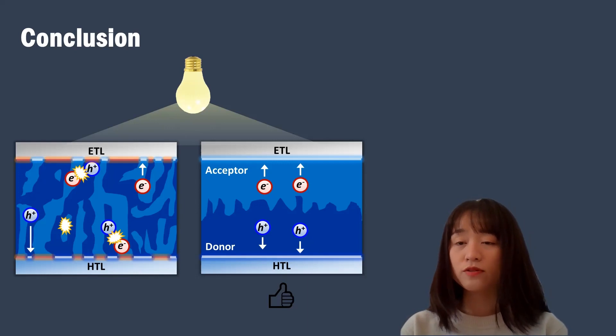Thanks to ideal structure of bilayer, namely pure acceptor and donor layer with ideal contact with each electrode, all charge carriers can be extracted efficiently without any charge trapping. Therefore, bilayer devices are greatly suitable for indoor photovoltaic applications.